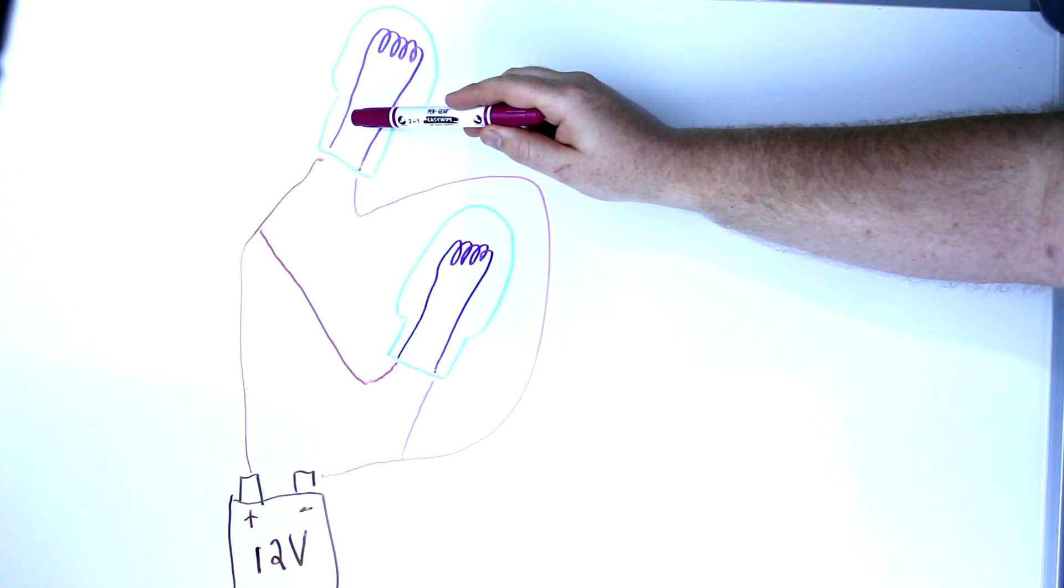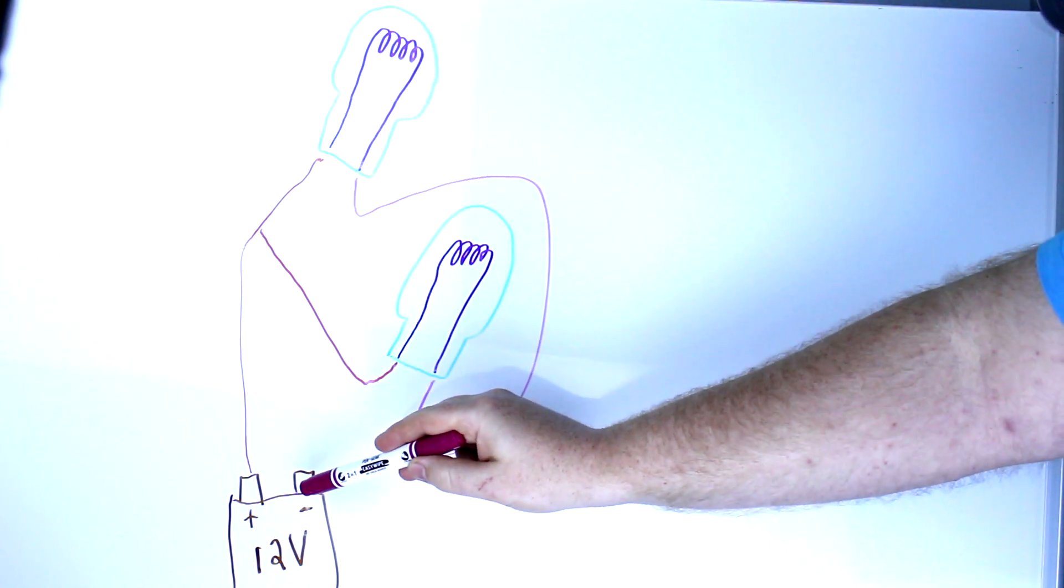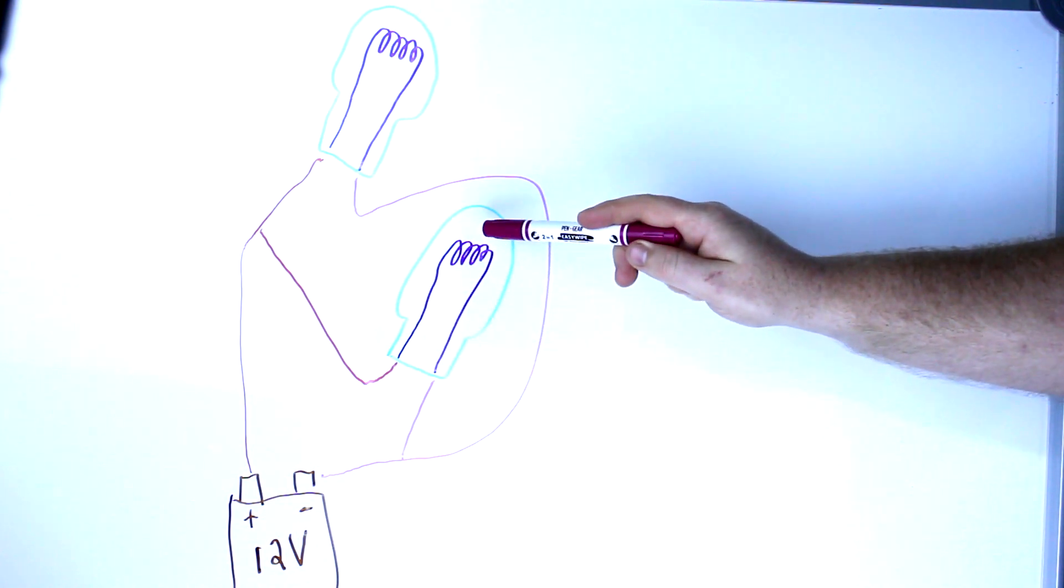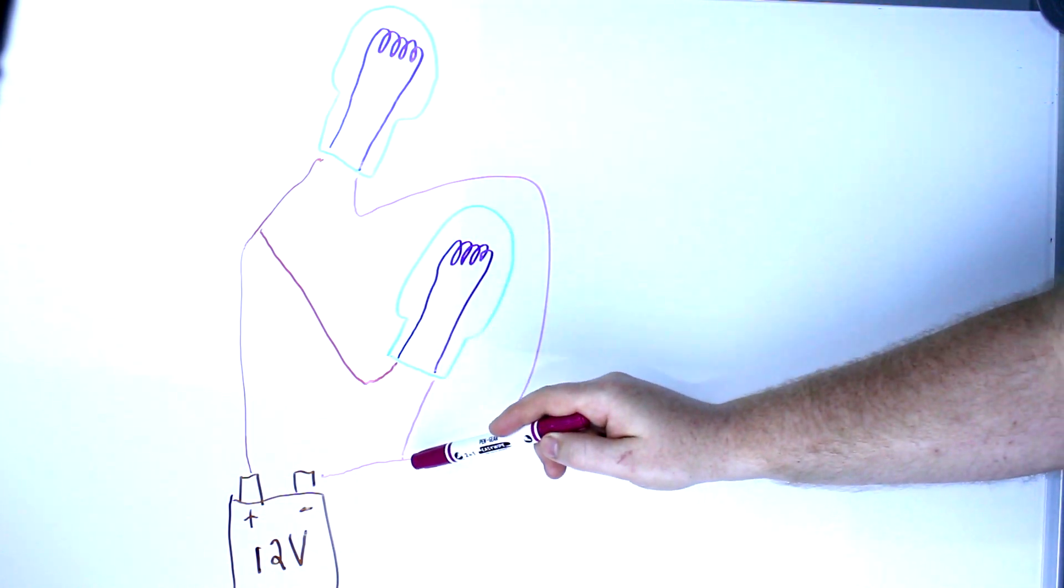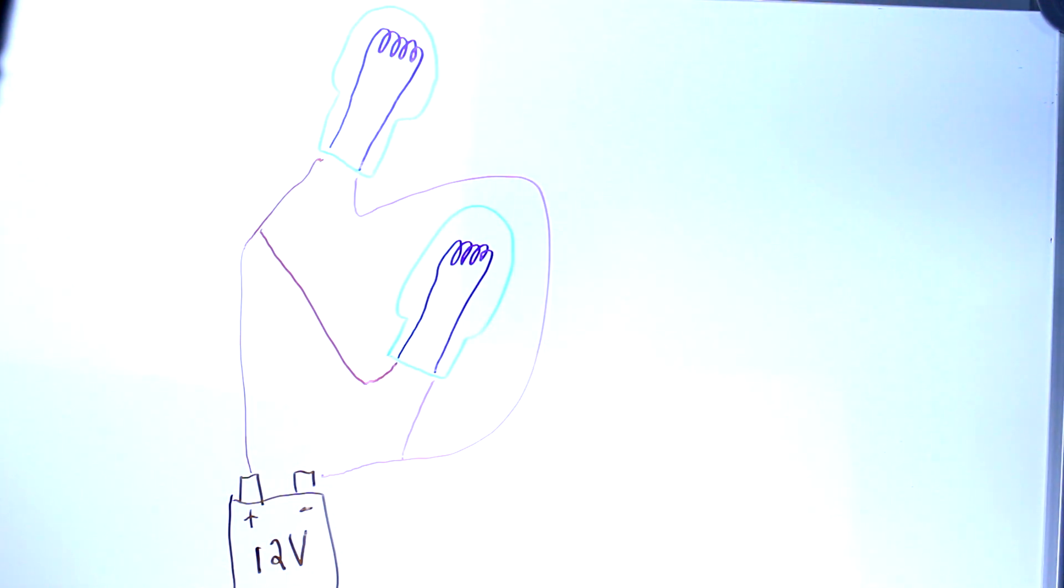So 12 volts gets to this bulb, it does its electrical work, and then goes back home. Same with this direction. It gets 12 volts here, does its electrical work, and it's back home. Also, if one of these bulbs goes out, then you can still get power to the other bulb.